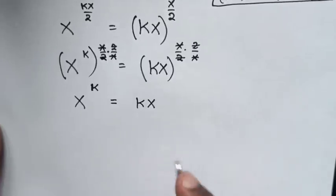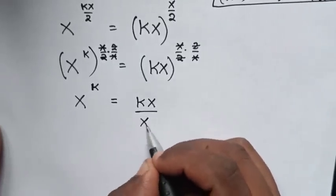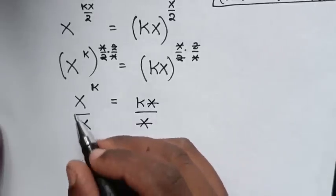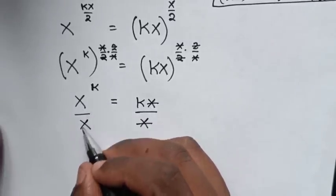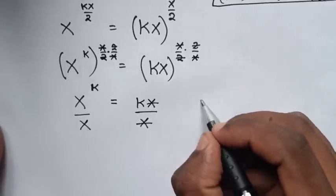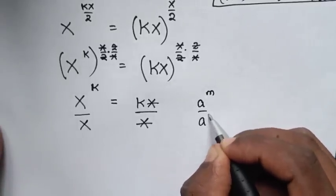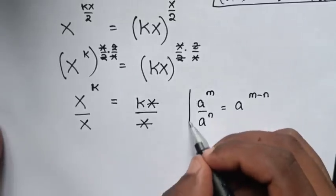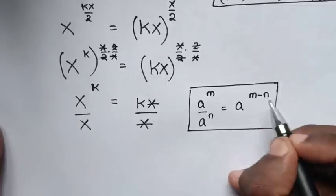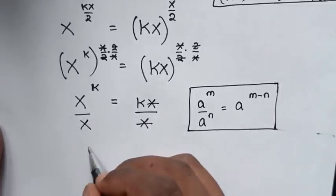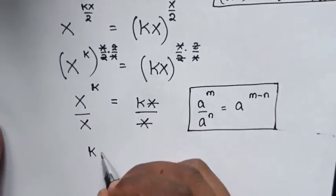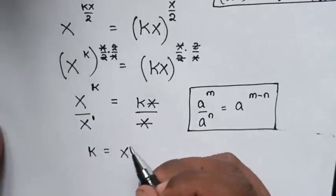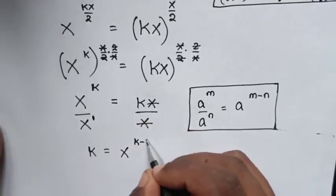Then, x is common, so we divide both sides by x. Applying the division of exponents rule — a^m / a^n = a^(m−n) — we get k = x^(x−1), since x is the same as x^1.